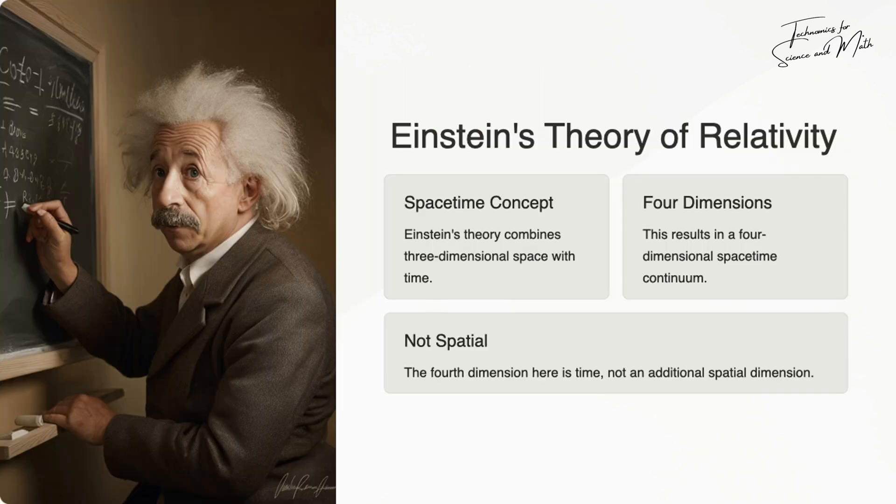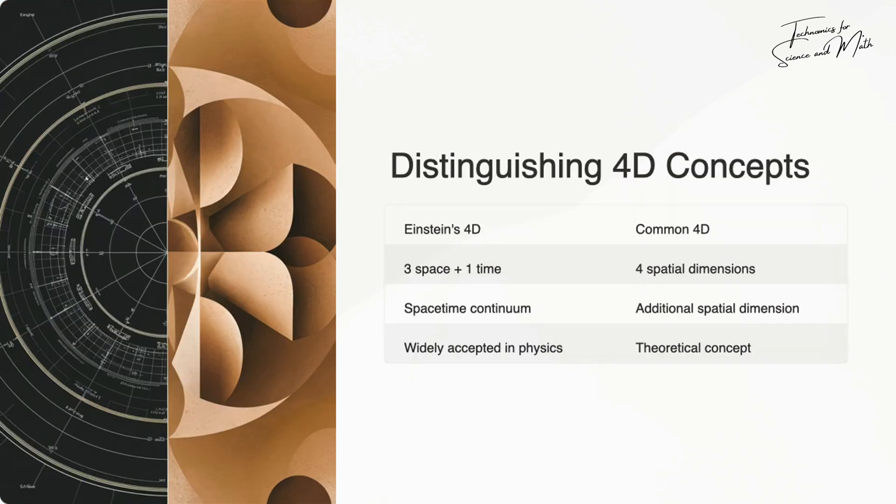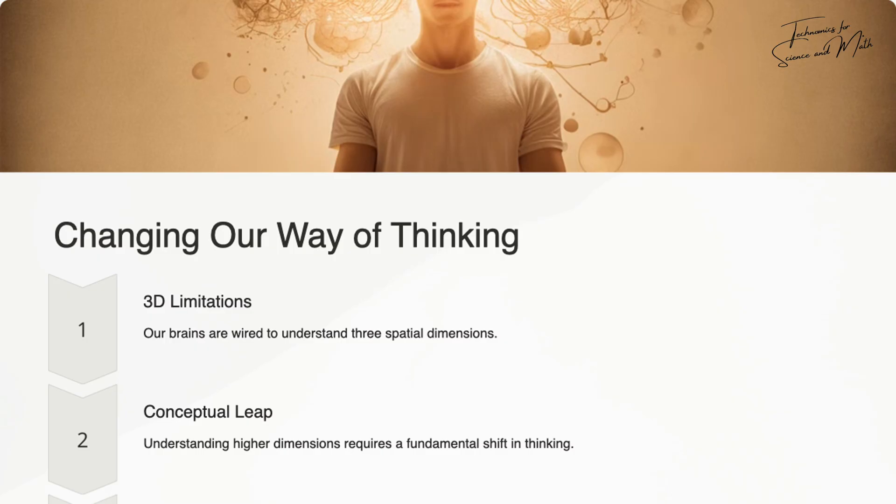In conclusion, saying that adding time makes it four-dimensional comes from Einstein's theory of relativity. This means combining our familiar three-dimensional space with time. However, when we talk about the fourth dimension here, we mean an additional spatial dimension.